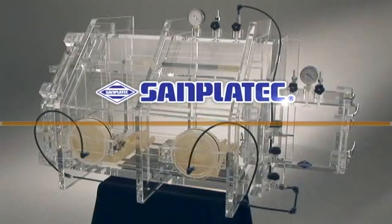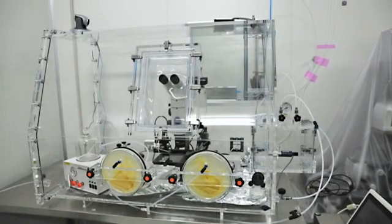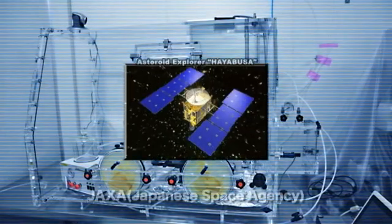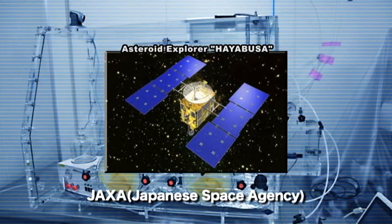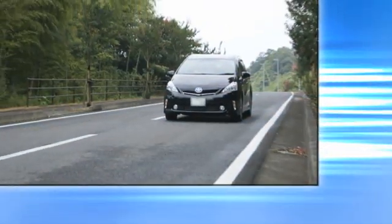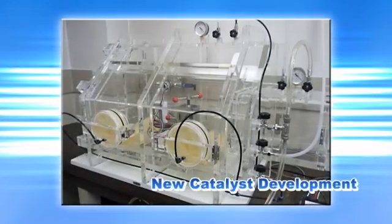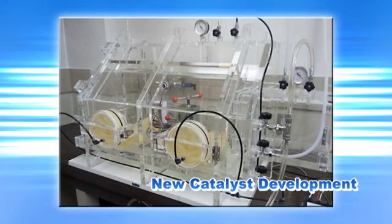This is the Sanplagic Acrylic Vacuum Glovebox. The Sanplagic Vacuum Glovebox is used in the latest research institutions like JAXA, Japanese Space Agency. It is used in lithium battery development and new catalyst development fields, which need a steady environment without external factors such as oxidation, moisture, and dust.